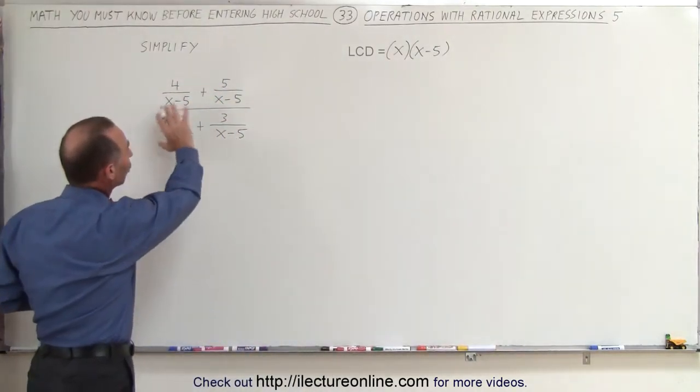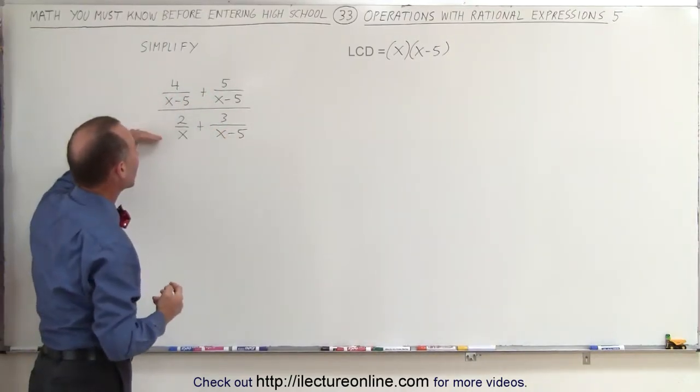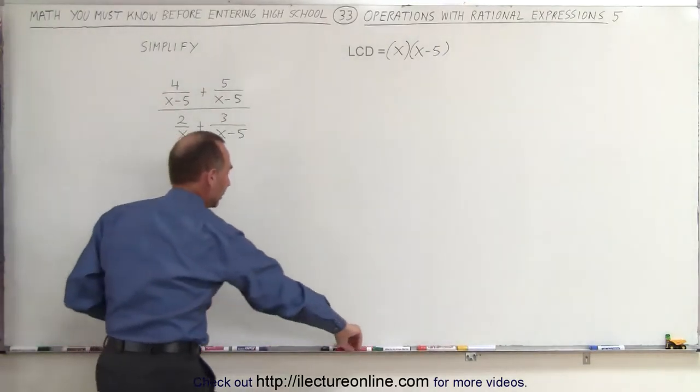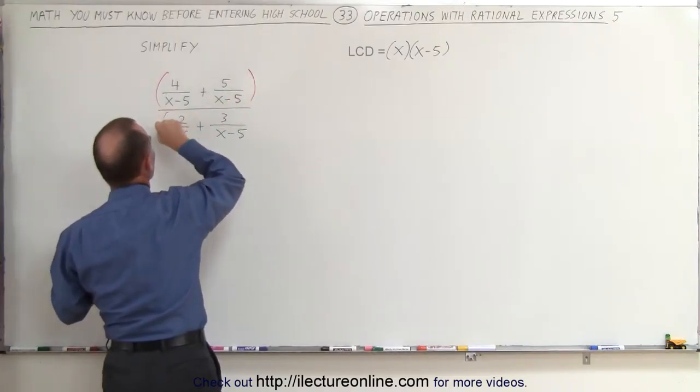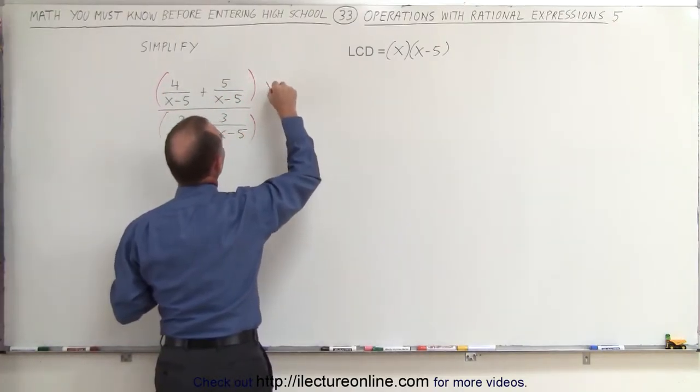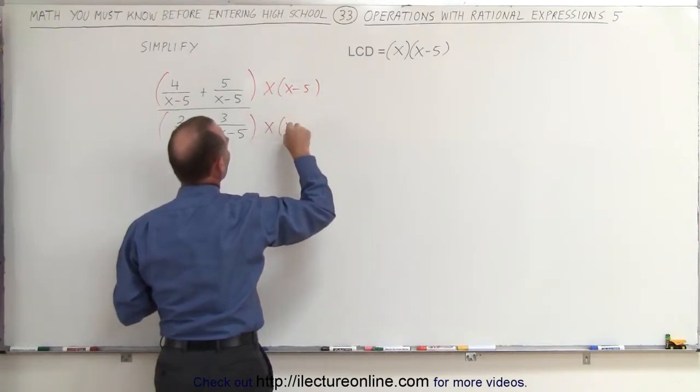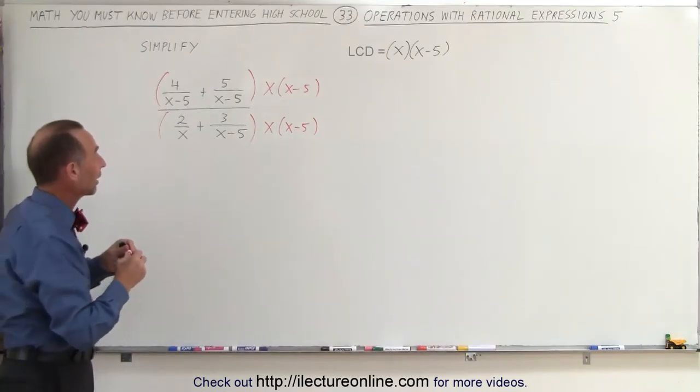And when we do that we can eliminate all the denominators of all the fractions in the numerator and the denominator and make it a lot simpler. So what we're going to do here is we're going to multiply both the numerator and the denominator by the quantity x times x minus 5. Of course we have to do exactly the same in the numerator as we do in the denominator, so we don't really change the value of this expression.